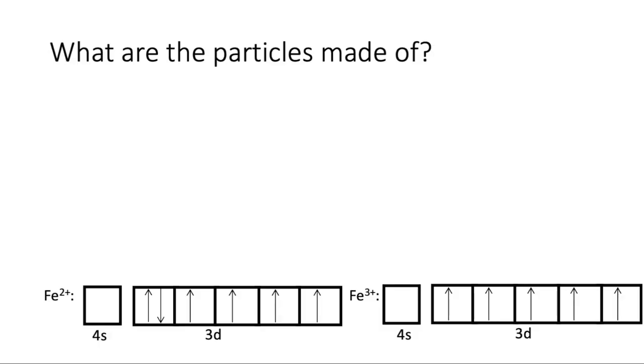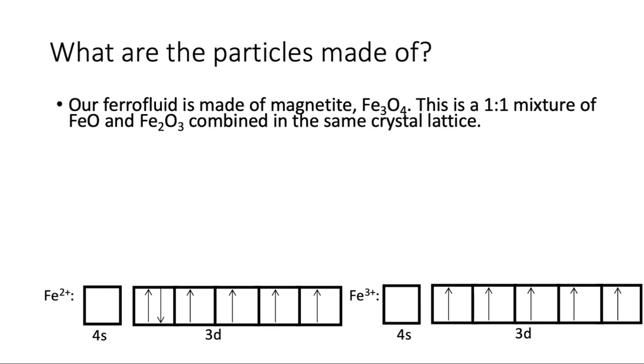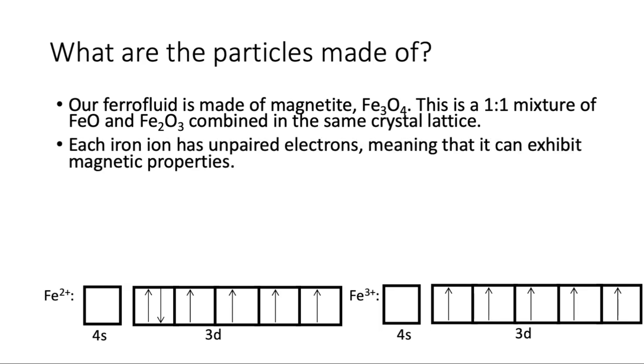So what are these particles actually made of? Our ferrofluid is made of magnetite, which is Fe3O4. And Fe3O4 is a one-to-one mixture of FeO and Fe2O3, or iron 2 oxide and iron 3 oxide. But they're combined in the same crystal lattice, so that's why we'll write Fe3O4.